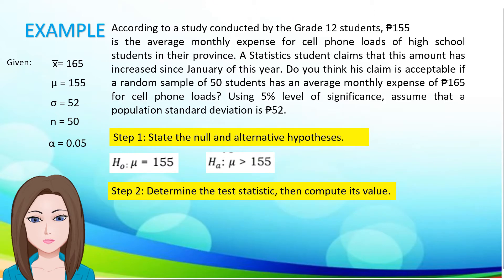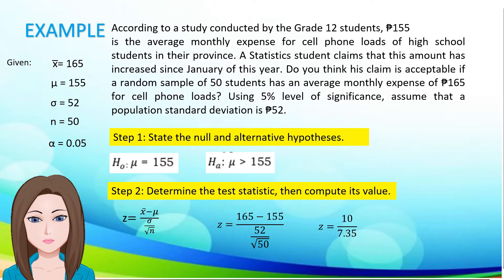Let us now determine the test statistic and compute its value. Since we are going to use a one-tailed test, which is the right-tailed test, we use the formula: z equals x-bar minus mu, divided by the standard deviation over the square root of n. Substituting the given, we have 165 minus 155 divided by 52 over the square root of 50. Thus, 165 minus 155 is 10, and 52 divided by the square root of 50 is 7.35. Therefore, the value of z is equal to 1.361.